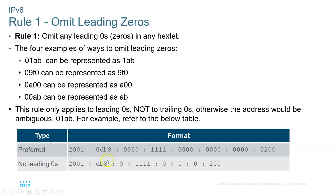The preferred format is to write everything down. But you can eliminate the non-significant zeros, so you can write it in a shortened way. You can also eliminate zeros that run consecutively, putting an empty colon between them, making it more concise. That's rule number one on omitting zeros — take a copy of this or write it down.